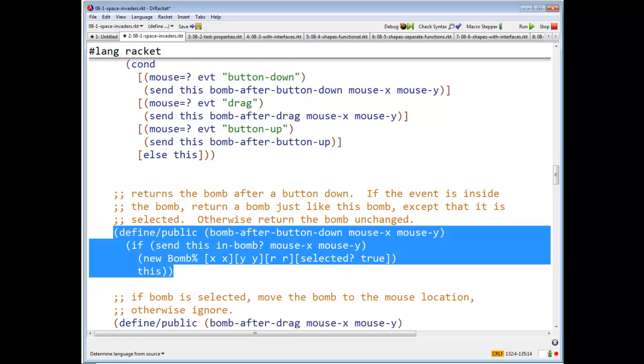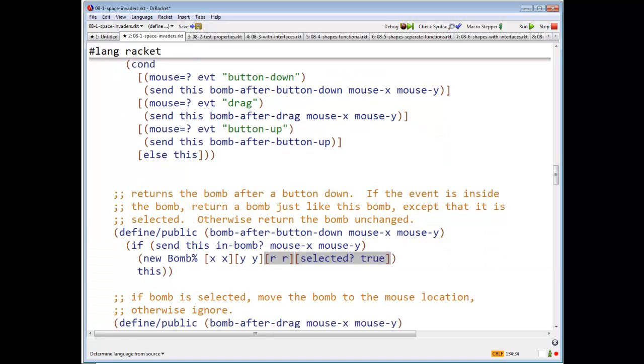After button down, what do we do? We return a new BOM that is just like, well it says, does this button down pertain to me? If so, I'll return a new BOM that is just like this one, except that selected is true.